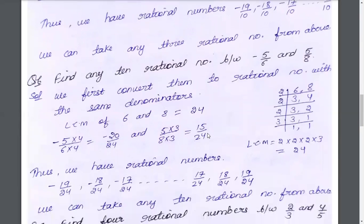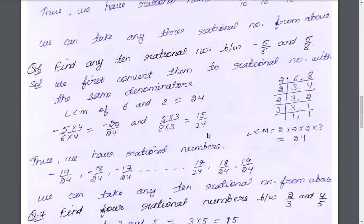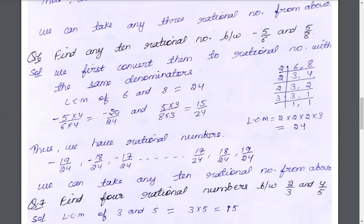Question 6: find any 10 rational numbers between minus 5 by 6 and 5 by 8. These two fractions are minus 5 by 6 and 5 by 8. In between these two rational numbers, we have to find 10 rational numbers. We first convert them to rational numbers with the same denominator. The denominators are 6 and 8, so we will take both LCM.